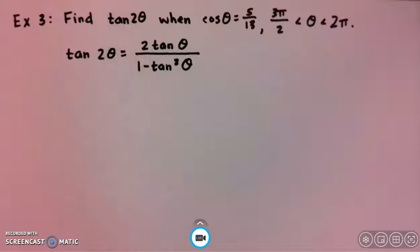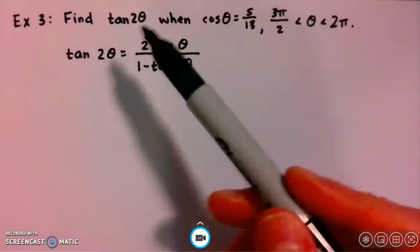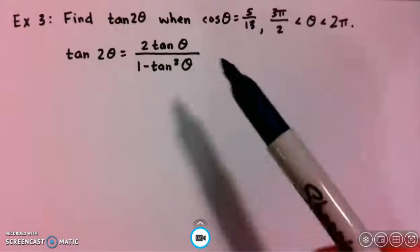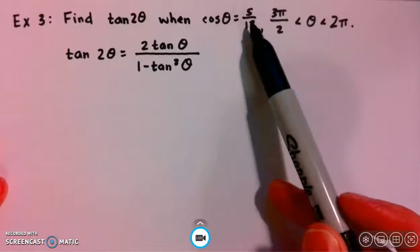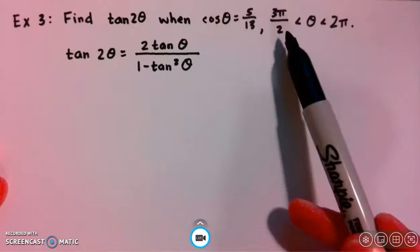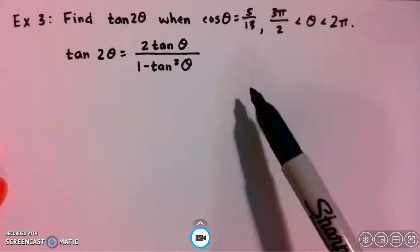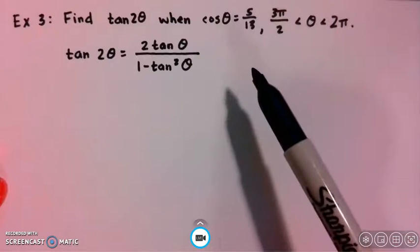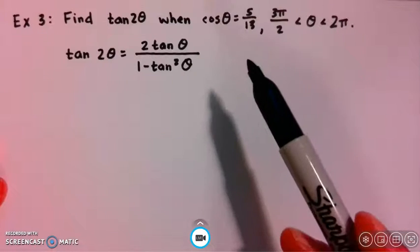In this example, we're going to find tangent of 2 times an angle theta, which is unknown. The information we have is cosine of theta equals 5 over 13, and theta is between 3 pi over 2 and 2 pi. This is the same information we had in the previous two examples.